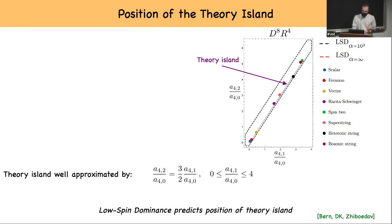So we do find that in practice, low-spin dominance does describe the data, but that's the first step. We'd like to understand what is the physical mechanism that forces the spectral density to have this behavior. Now we can use low-spin dominance to go a step further. Quite surprisingly, we see that the theory island—namely where all the theories live—is very well approximated by a line segment that has a very simple slope of 3/2 and very simple boundary points.